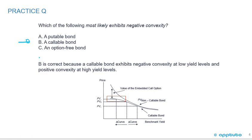The correct answer is B. A callable bond exhibits negative convexity. The shape of the curve of the callable bond is the same as benchmark yields increase, but as they decrease the bond can be called, so the shape of the curve changes — and we call that negative convexity.